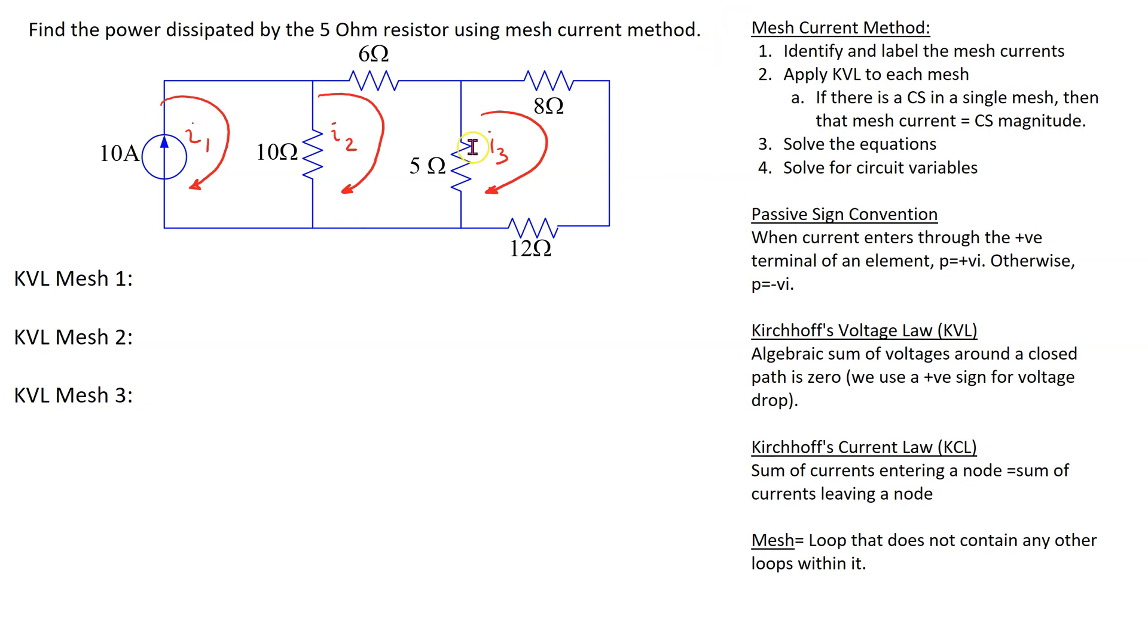For this given circuit, step one is identify and label the mesh currents. This is already done here. We can see that there are three meshes. The mesh currents are labeled I1 to I3, and we have assumed clockwise direction for the mesh currents.